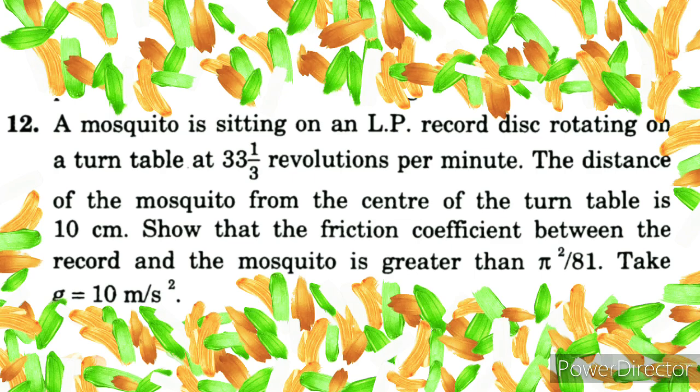Circular motion ka numerical 12. A mosquito is sitting on an LP record disc rotating on a turntable at 33⅓ revolutions per minute. The distance of the mosquito from the center of the turntable is 10 centimeters. Show that the friction coefficient between the record and the mosquito is greater than π²/81. Take g = 10 m/s².